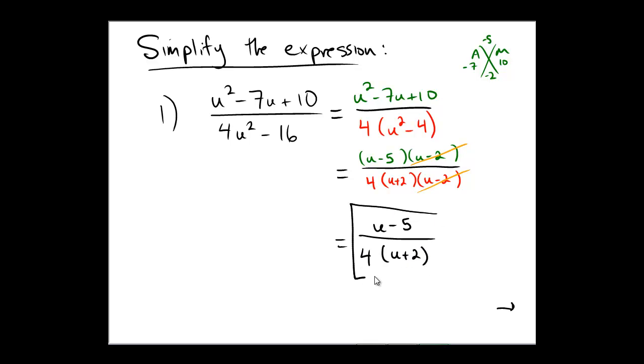And for most intents and purposes, for example, in a calculus sense, I don't like to distribute the denominator. This particular form is actually much easier to work with. So I would leave it as u minus 5 over 4 times the quantity u plus 2.